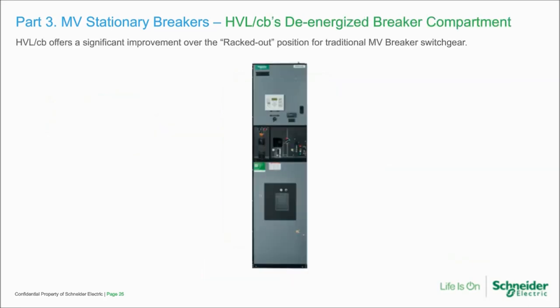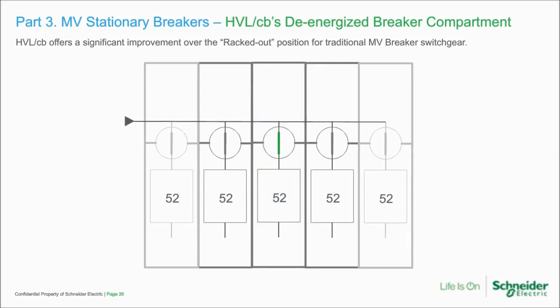This is a great improvement over the racked out position of traditional MV breaker switchgear. Here's a lineup of HVLCB feeders — 52 is the ANSI designation for the breaker, and above you'll see the disconnect as part of the compartmentalization. When the disconnect moves into the open position, the entire breaking compartment is de-energized. This is totally different from the way that maintenance is performed in metal clad withdrawal breaker switchgear.